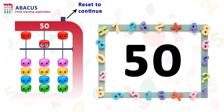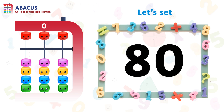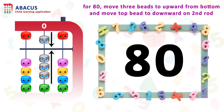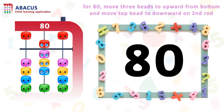Let's see one more example on rod 2. Here we have the number 80. So let's set 80. Can you guess which bits we have to move? For 80, we have to move 3 bits upward from the bottom and move the top bit downward on rod 2. And here we get the number 80.